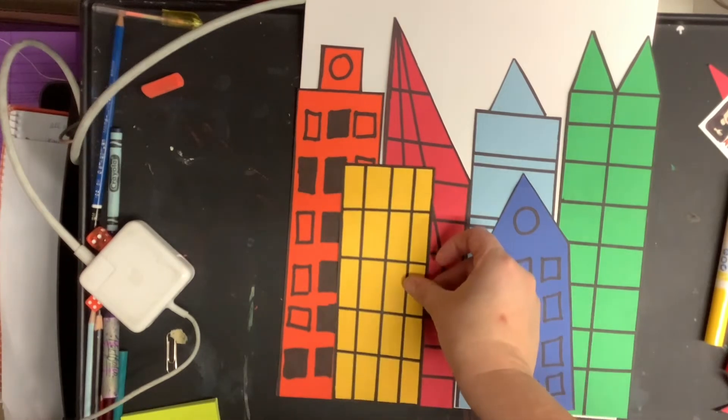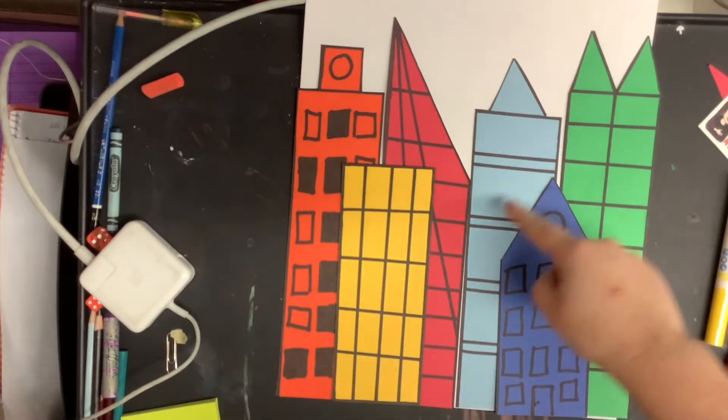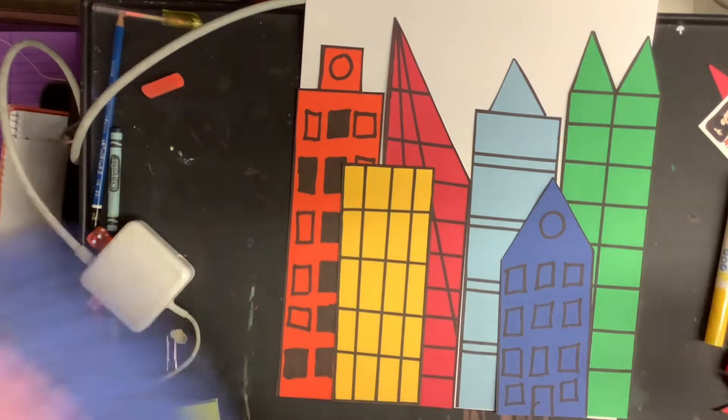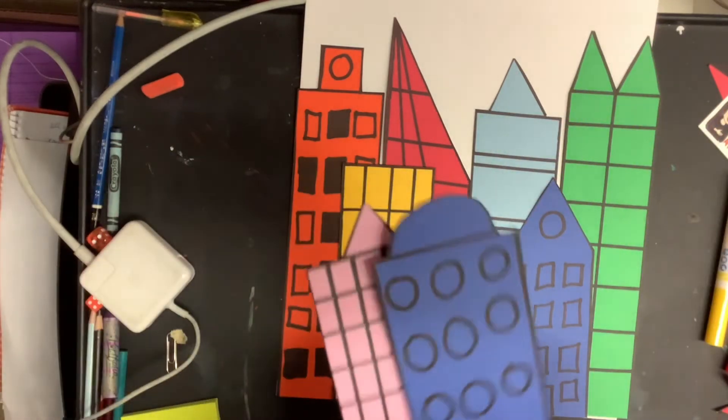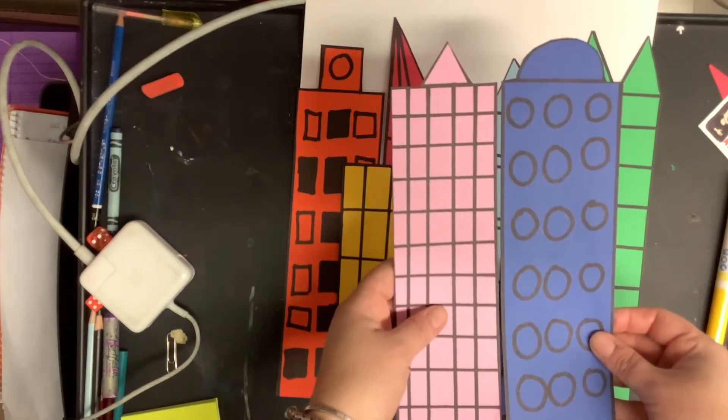And I would put them in front kind of off-center to the original buildings because then you can see the original buildings in the background. And you can see here that if I do that I actually didn't use all my buildings which is fine. I can glue them down like this. But if all my buildings are about the same height and they're going to butt up against each other like this,